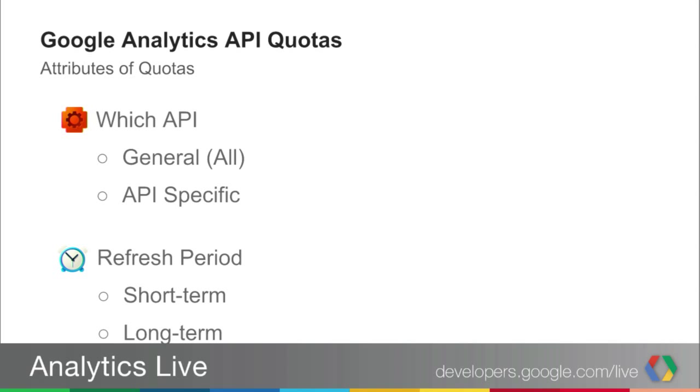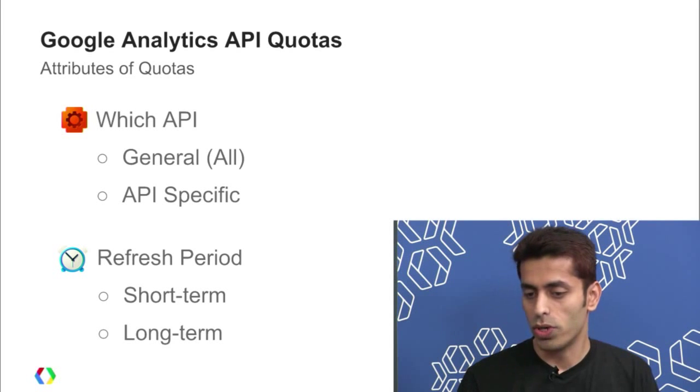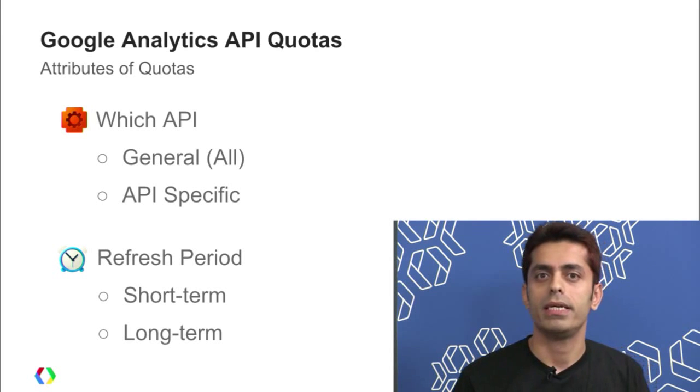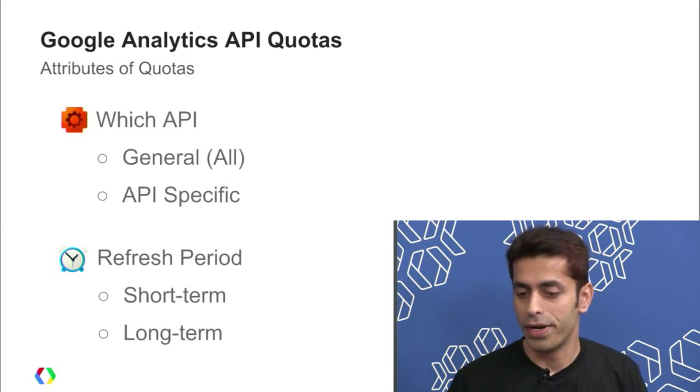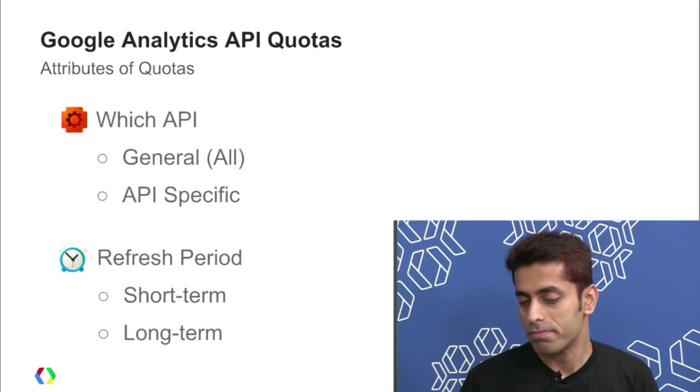Quotas can also be categorized by the refresh period — how often you get the tokens refilled. Tokens are basically a unit which allows you to make one or more quota requests. Short-term means the tokens get refreshed quickly, like one second — an example is QPS or the concurrent quota. Then we have long-term quotas, meaning daily quotas, refreshed on a 24-hour basis. We only have 24-hour long-term quotas here — keeping it simple.